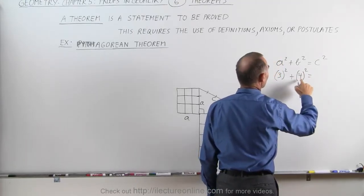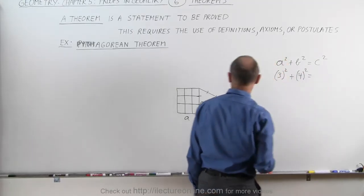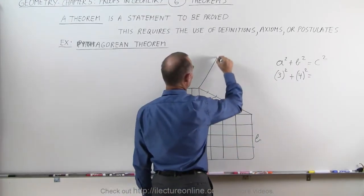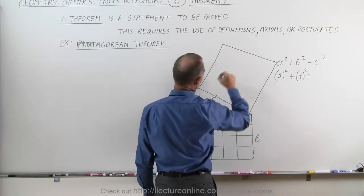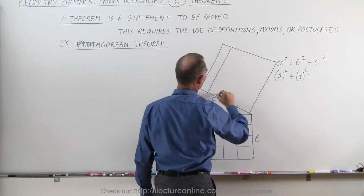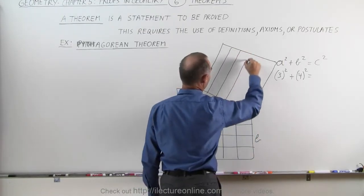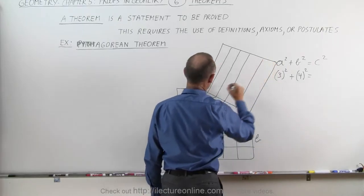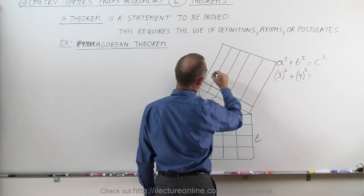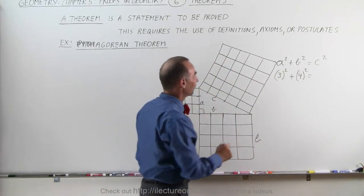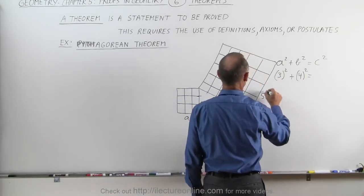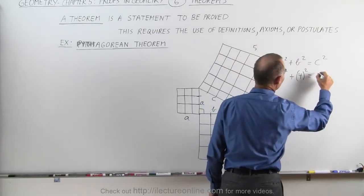And if you add nine plus sixteen, that should equal twenty-five. And again, we can show that here graphically by making this into a square and then dividing this into five equal slices in each direction. I'm not sure how equal they were here on the board, but close enough. You can see that five times five gives us twenty-five.